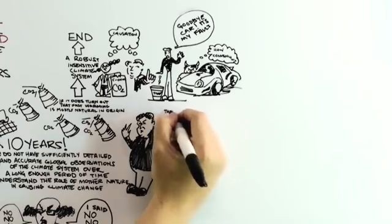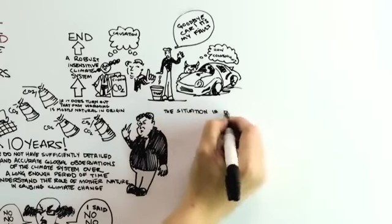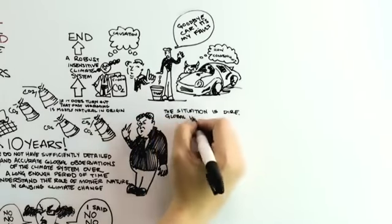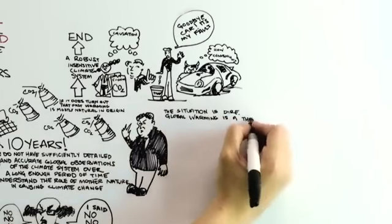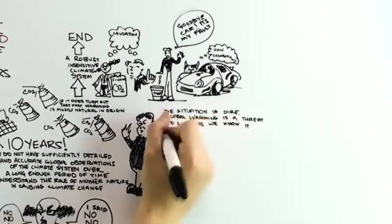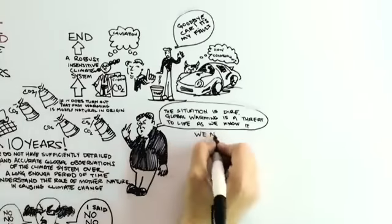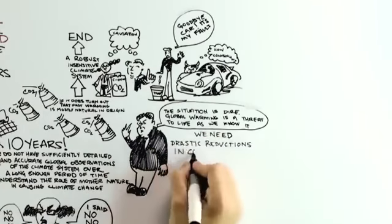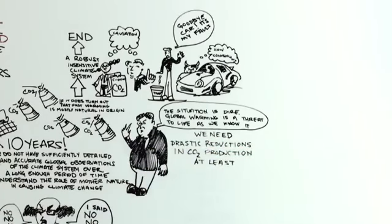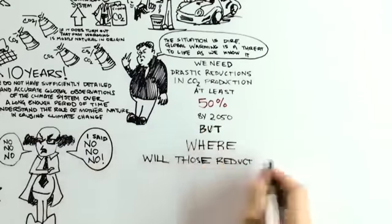If global warming is in fact man-made, and if the dire predictions of Al Gore and his friends are to be believed, and all of this warming is indeed a threat to life as we know it, then what we really need are drastic reductions in our production of carbon dioxide in the coming decades, say at least 50% reductions by 2050. But where will those reductions come from?